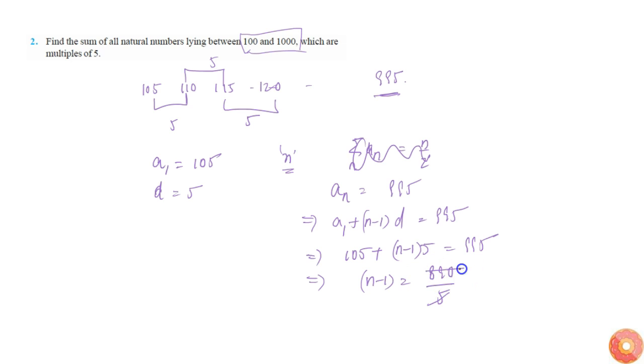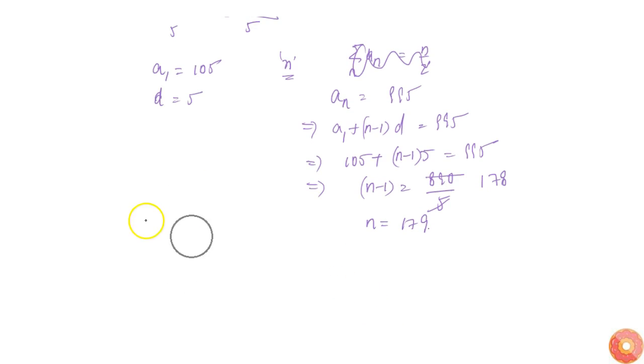Which is simply 178, so n is equal to 179. So n is equal to 179. Now we need to find sum of n terms, so sum of 179 terms.